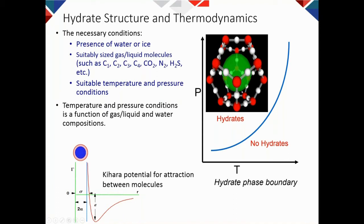Another important factor is the composition of water. If we have components dissolved in water, some water molecules are occupied in dissolving them, leaving fewer water molecules available for hydrate formation. This acts as a hydrate inhibitor, and we use this property to melt hydrate blockages or to prevent hydrate formation.